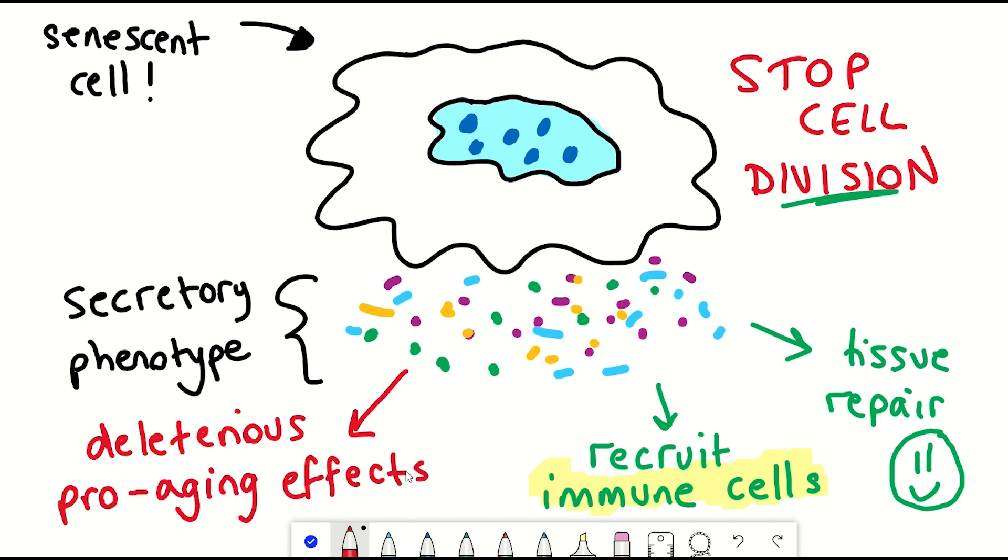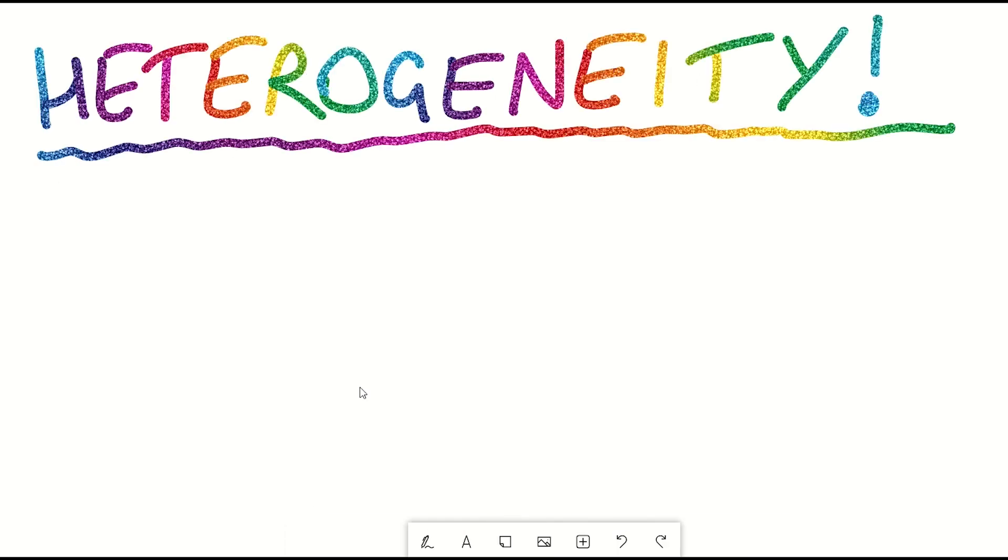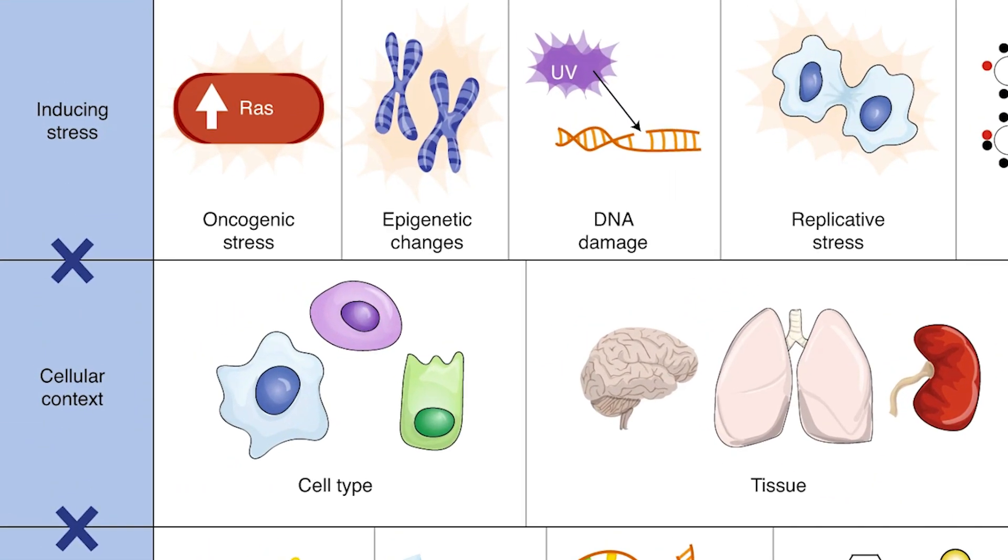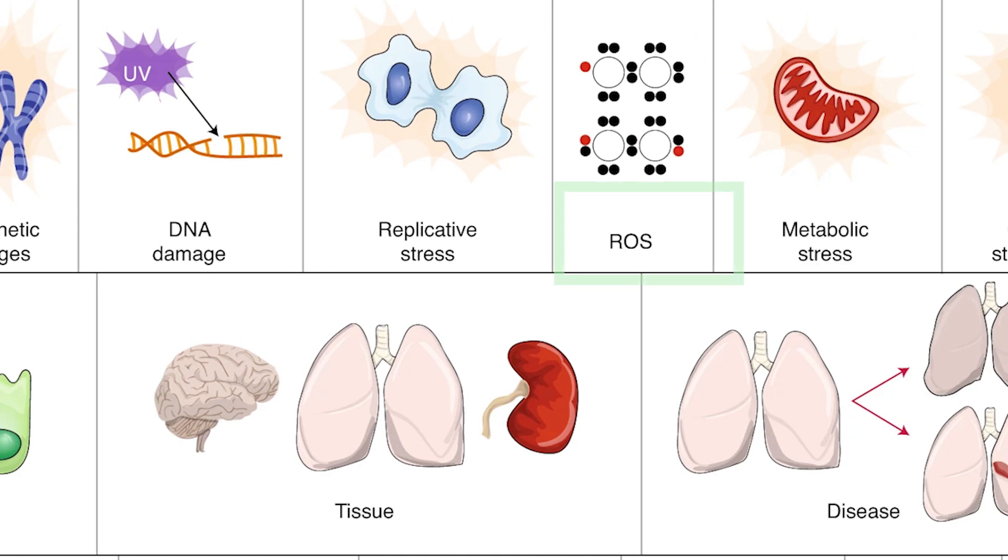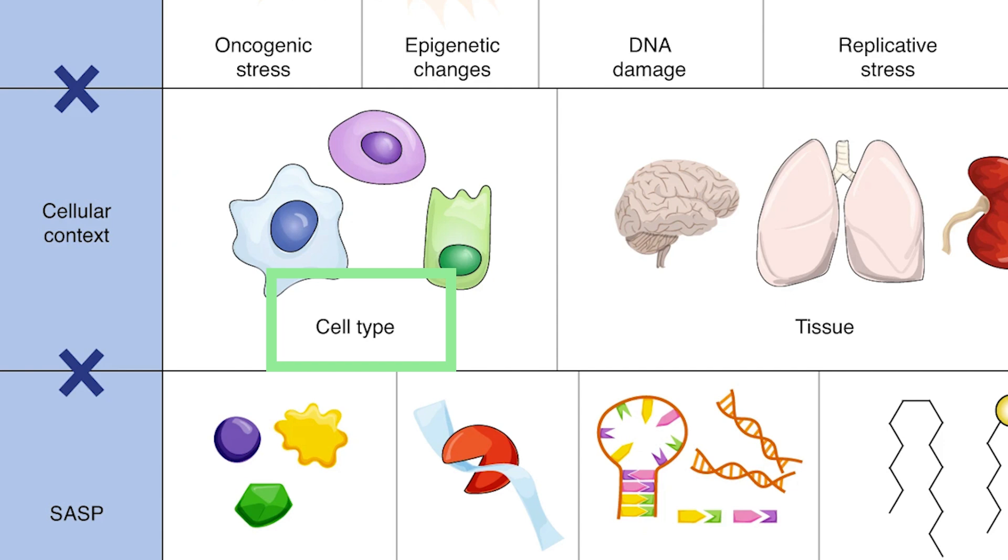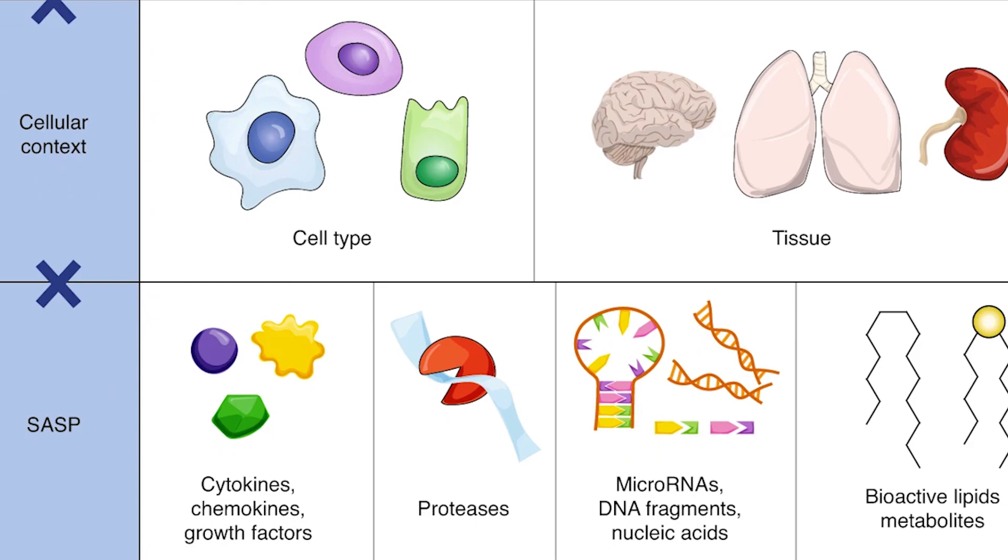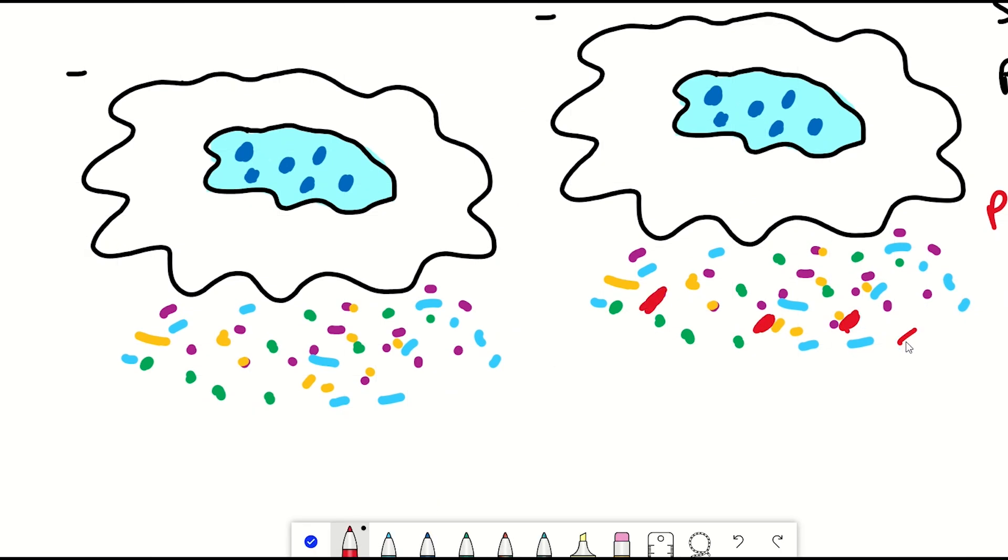And I found this nice figure from a recent review, the link is in the description, which basically highlights a key principle of senescent cells, which is they have a huge diversity. Firstly, a cell can become induced to senesce for different reasons. Maybe they have some DNA damage, maybe there are too many reactive oxygen species, or they've replicated too many times. Secondly, the cell types are different. You can have senescent skin cells or a senescent liver cell, and because they're different cell types, they will also slightly differ. And then another region of heterogeneity is in the factors that they secrete. That's not just the composition of what exactly they secrete, but also the abundance, how much of those factors they secrete. And then there's the different diseases that the senescent cells have been linked to.